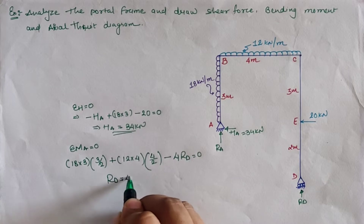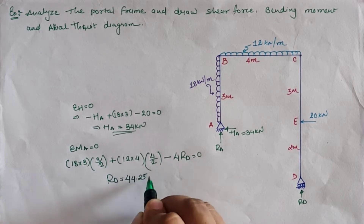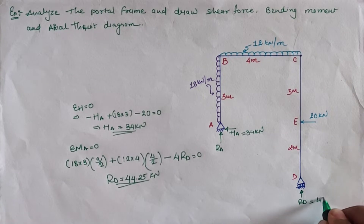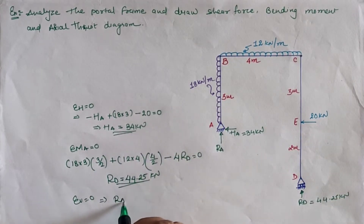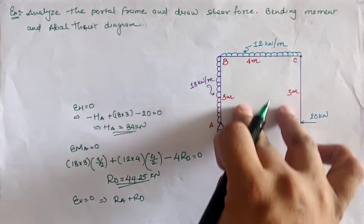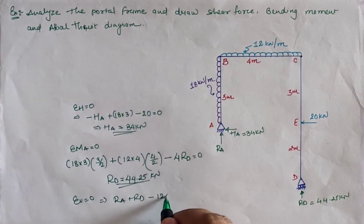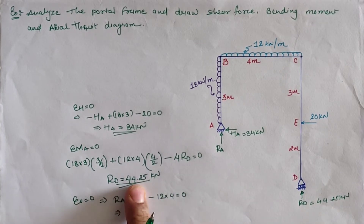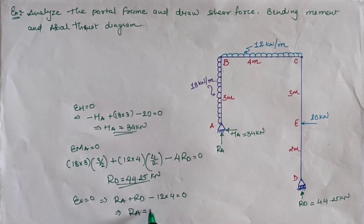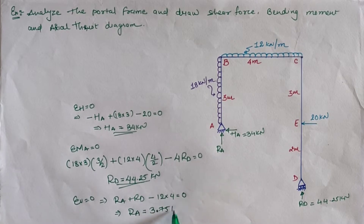Solving the moment equation gives the reaction at D as 44.25 kN. For the third equilibrium condition, ΣV = 0: Ra plus Rd minus 12×4 equals zero. Substituting Rd = 44.25 kN, we get Ra equals 3.75 kN.